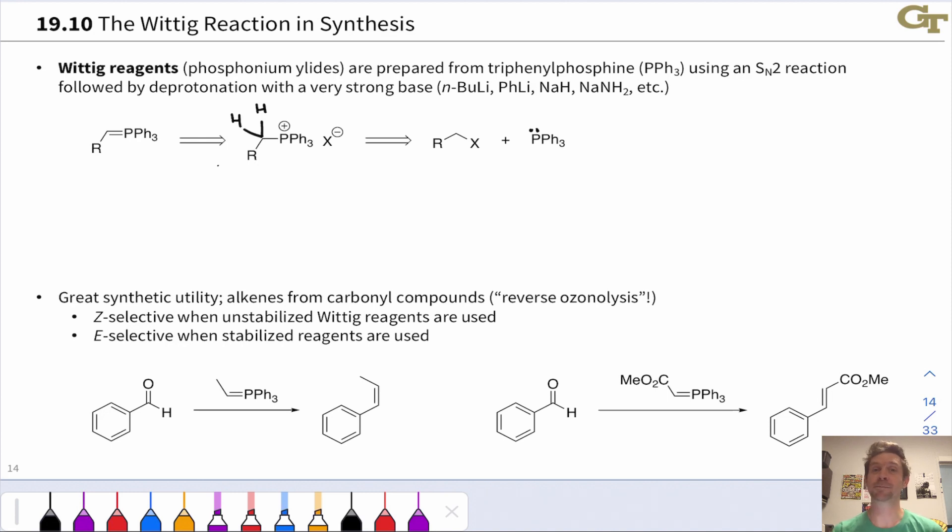So we typically make it and then immediately add the ketone or aldehyde. But how in the world do we make this species with positive charge on phosphorus and negative charge on carbon right next door?